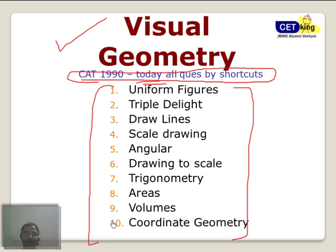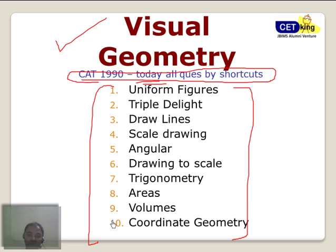There are many people who claim they know shortcuts for CAT and give examples. But most of the time they have made shortcuts for a particular type of question — the shortcut is only valid for that one question. The moment you change the values or tweak the question, those formulas or shortcuts go for a toss. So avoiding that kind of thing, I am going to give you 10 logical concepts that are more than sufficient to crack any kind of geometric question.